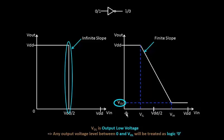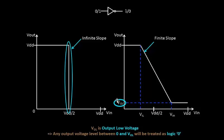On the output side, if the input voltage lies between 0 and VIL, the output is expected to be high. Any input voltage between VIH and VDD causes the output to be low — close to 0 — some finite value VOL, which will be recognized as logic 0.